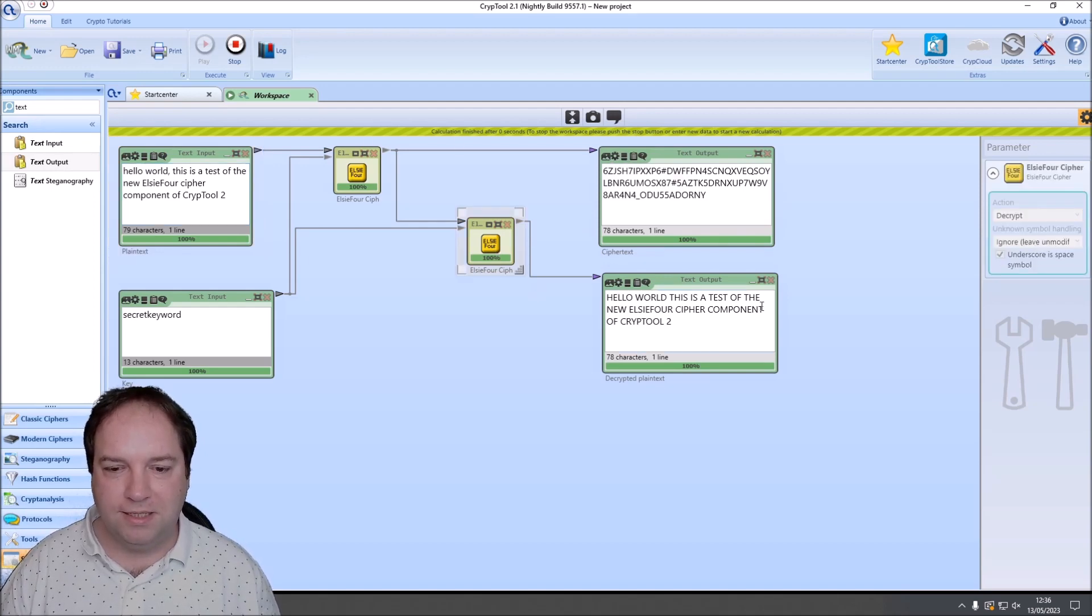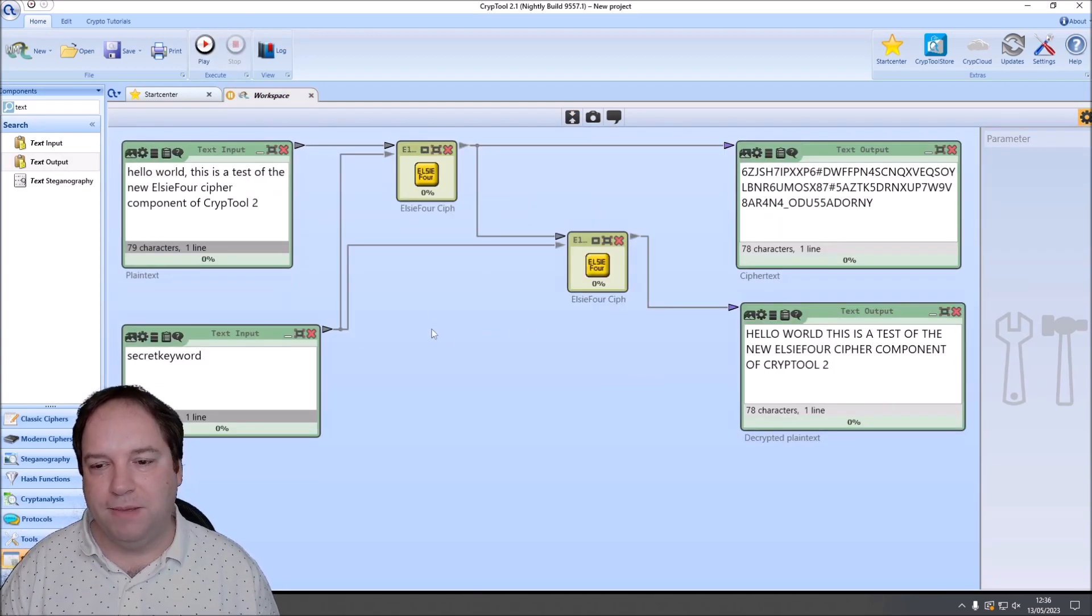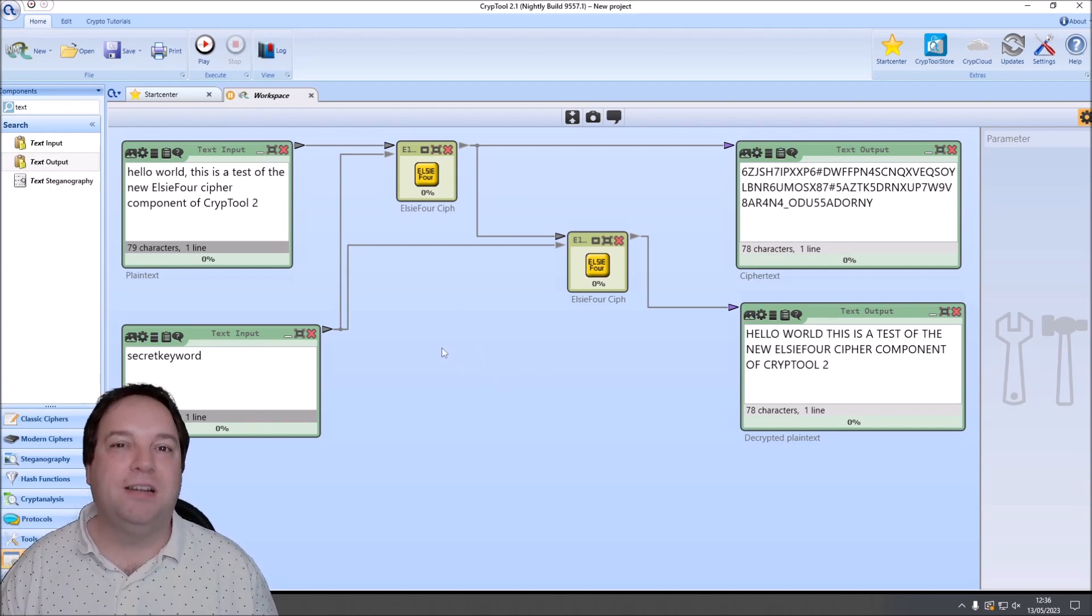And also it is decrypted here. So we have here hello world. This is a test of the new LC4 cipher component of CrypTool 2. And this is how we implemented it in CrypTool 2. You could now also print out the tiles that I have shown you in the introduction of this video, or in the overview of the cipher. You could try to use the cipher by hand. It really works. I tried it. It works by hand. Or you could download the newest nightly build of CrypTool 2 to use it in CrypTool 2.